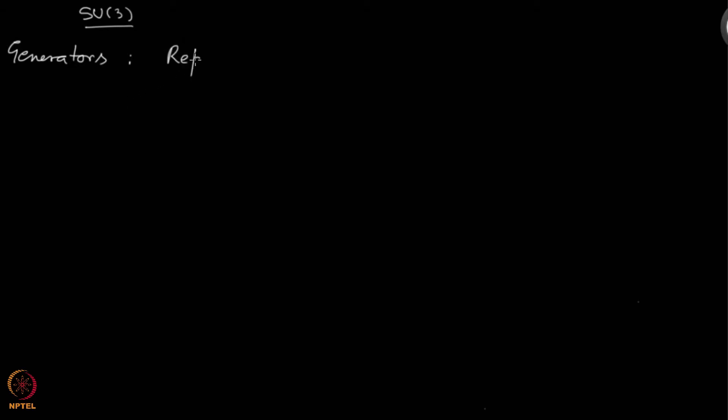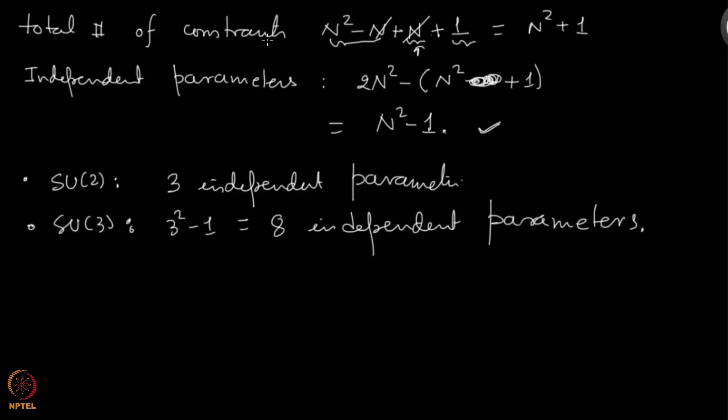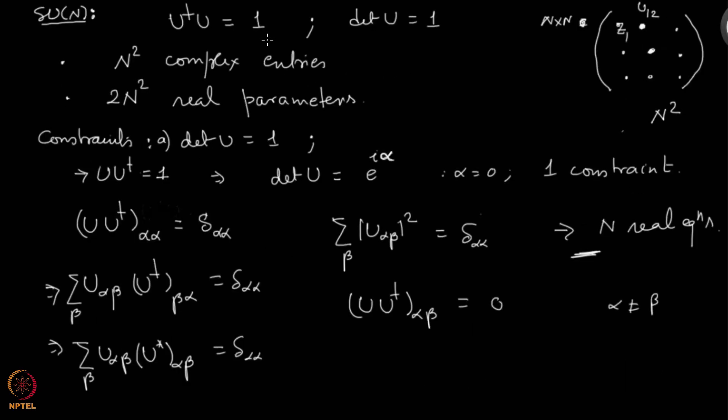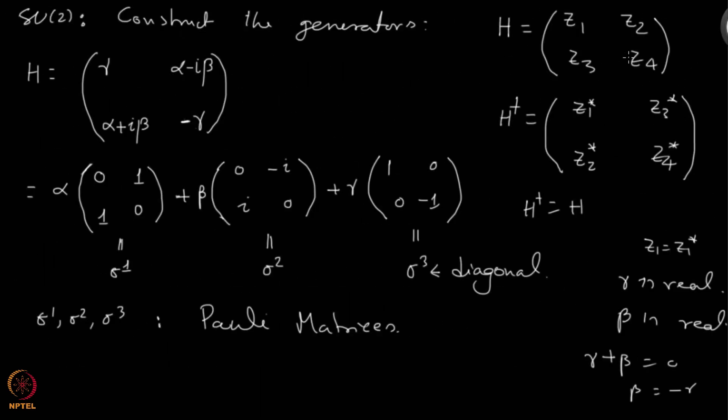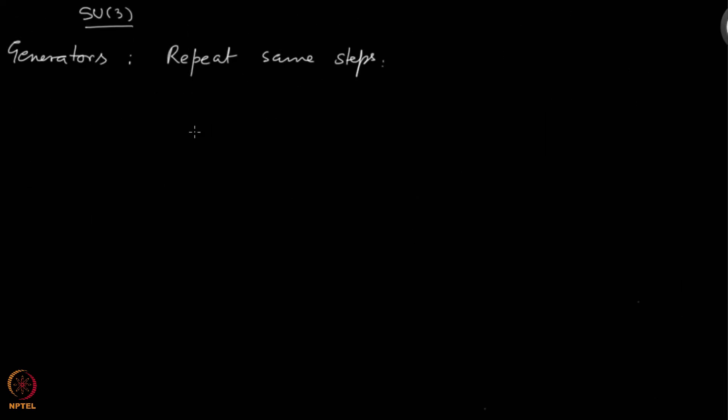Let's ask what are the generators of SU(3) group. If you repeat the same steps as before for SU(2), meaning you start with writing such a matrix with all these entries z1, z2 and so forth, a 3×3 matrix, then impose that H dagger should be H, that the Hermitian conjugates are equal.